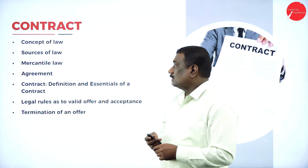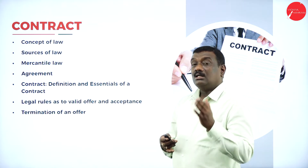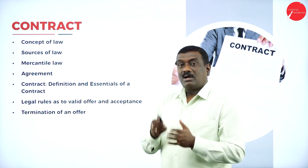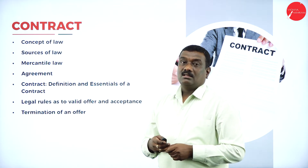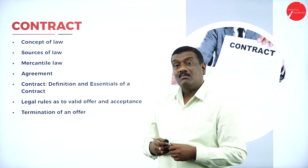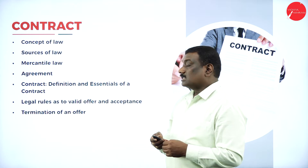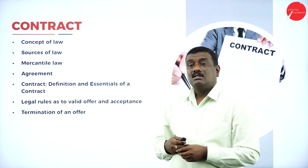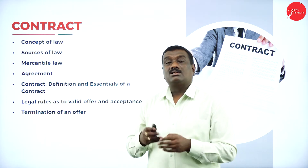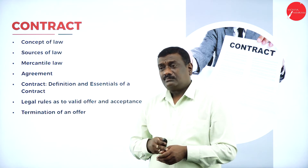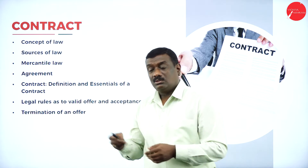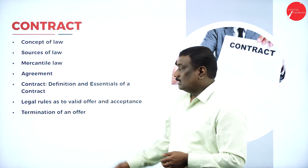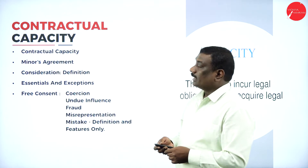Legal rules as to valid offer and acceptance: what are the legal rules for offer and acceptance? Offer means one party offers to do something to the other party, and the other party has to accept that offer. Then termination of an offer — if an offer has been terminated or disqualified, it may be due to timing, validity period, or the other party not accepting. All of this you are going to study.